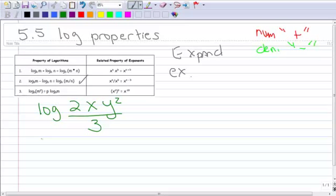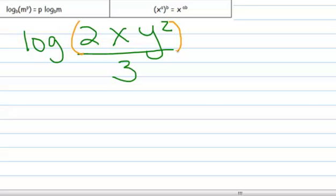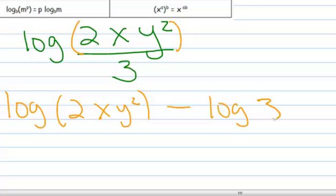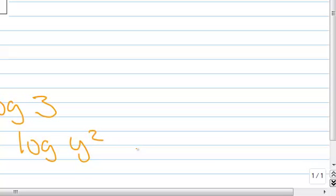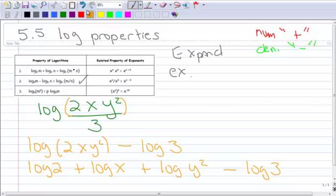I could think of the whole numerator together, so let's do that. And so now I can separate this as the log of 2xy squared minus the log of 3. And now I can see that these are multiplied together. So now let me expand those. This becomes the log of 2 plus the log of x plus the log of y squared. And then I still have the minus the log of 3 on the end.